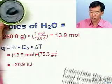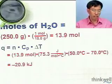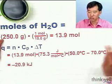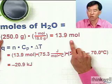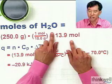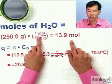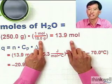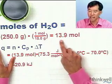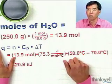First of all, we're going to actually convert to the number of moles, so we're going to then use the molar heat capacity. We have the moles of water is equal to the number of grams of water times one mole over 18.0 grams. That's the molar mass of water, and so that gives us 13.9 moles of water.